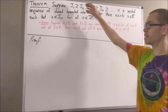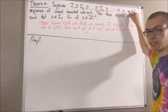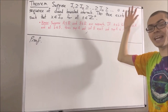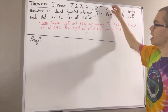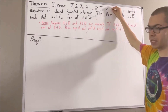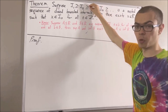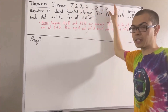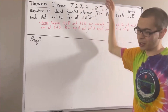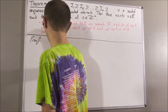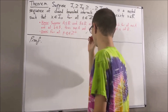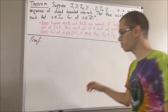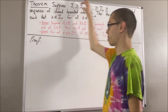Another thing: since this sequence is nested, this means if we give ourselves any two positive integers p and q, well then ip is going to be a subset of iq. Now, let's get into proving this theorem.